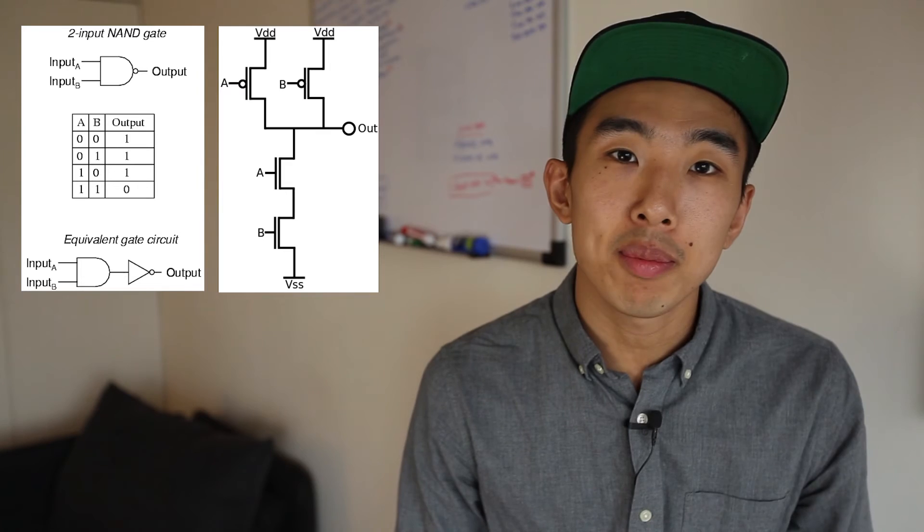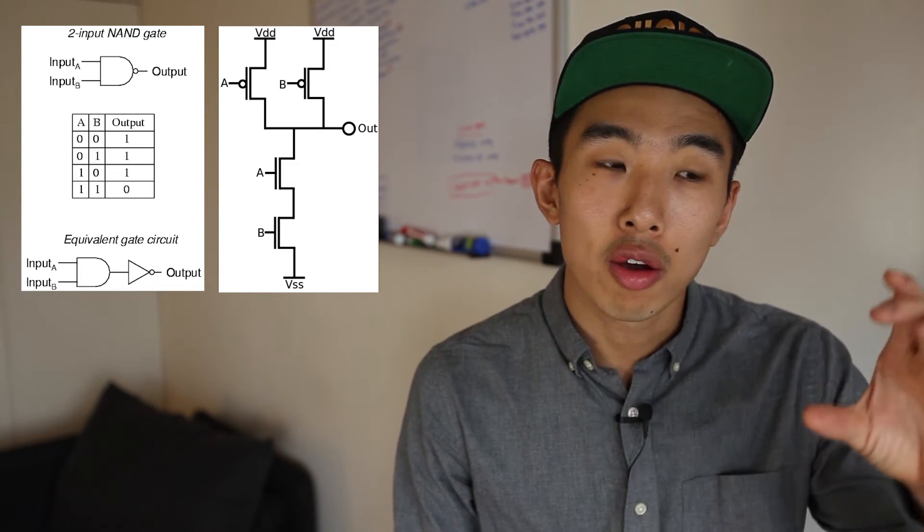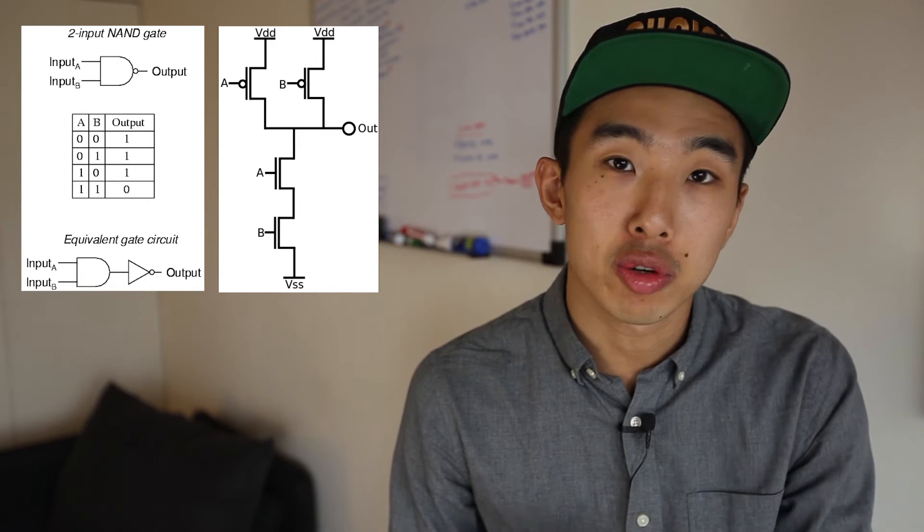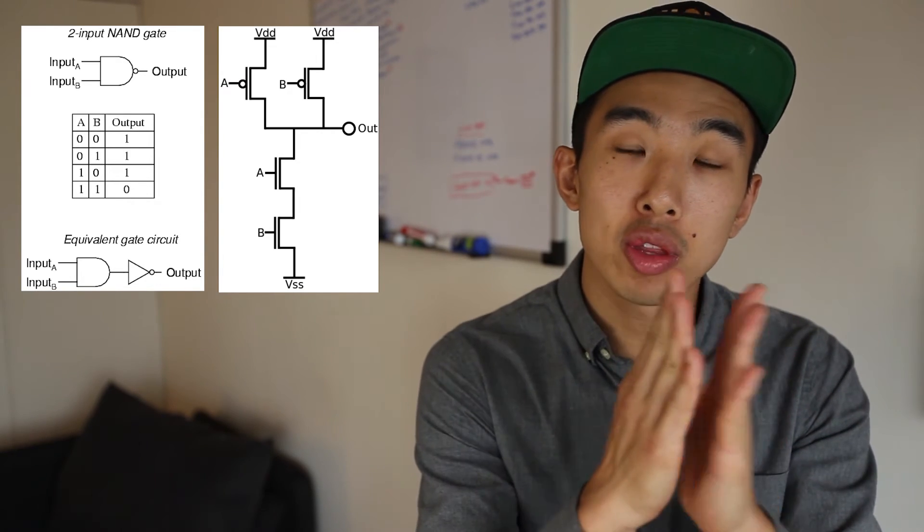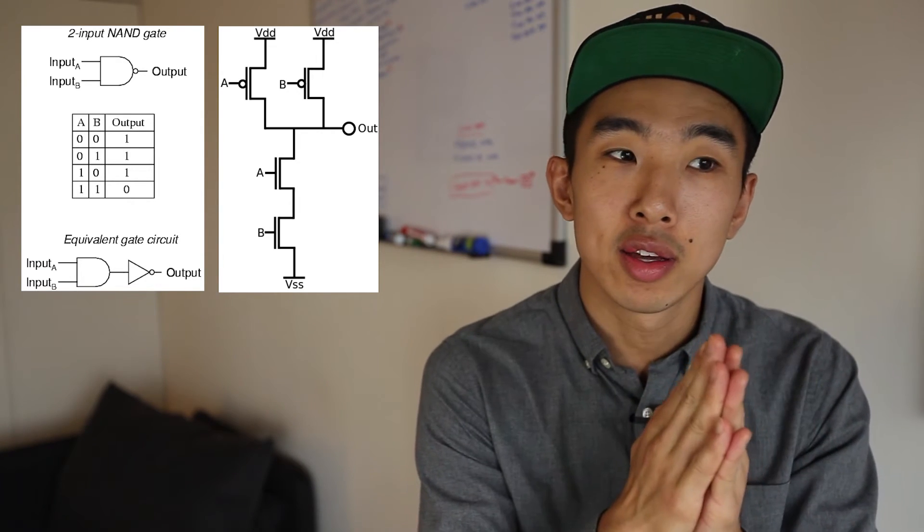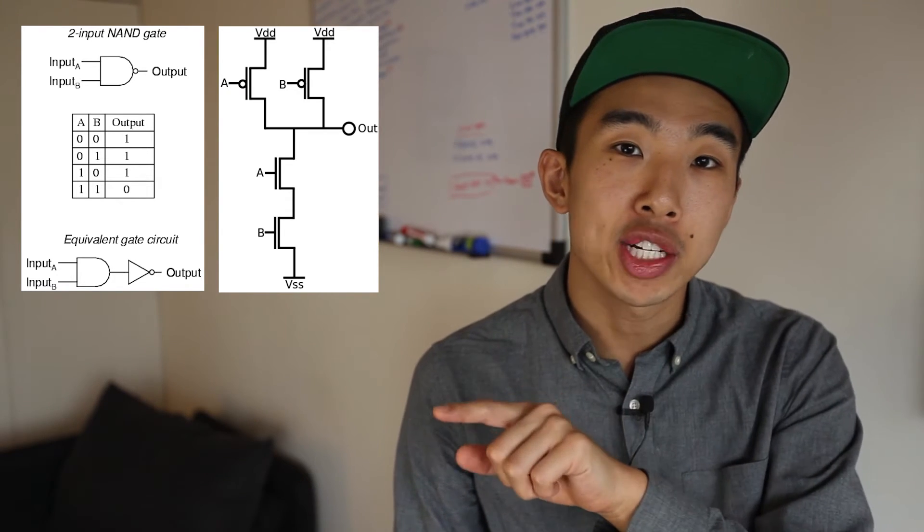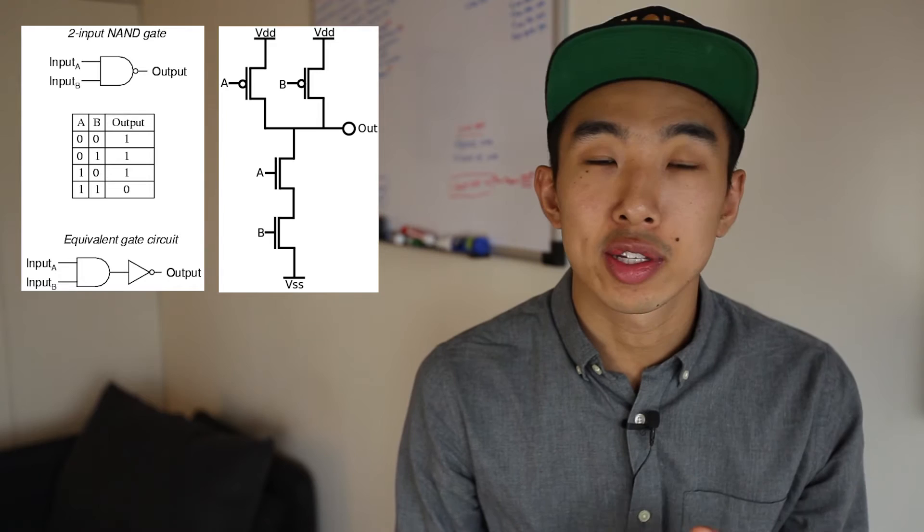All right, so in this diagram, you can see how A and B are feeding into two of the gates that's connecting the output with ground, right? And if both those gates are connected, or if both A and B are one, the output is actually going to get connected to ground, and it's going to turn zero.